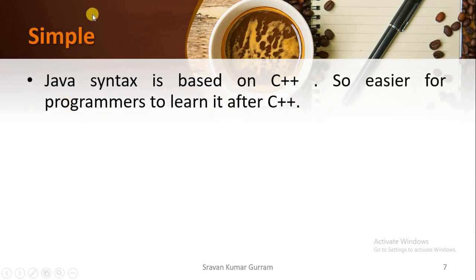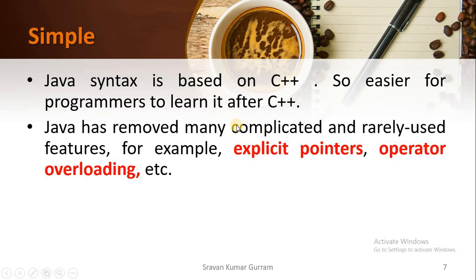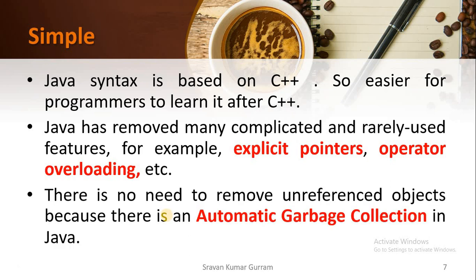First advantage is simple. In what aspects can we say Java is simple? The Java syntax is based on C++, so it is easier to learn Java if a programmer knows C or C++. Java has removed many complicated and rarely used features like explicit pointers and operator overloading. Java also has the concept of automatic memory management with the help of garbage collection. Whenever unreferenced objects exist, they will be removed automatically, reducing the burden on the programmer.